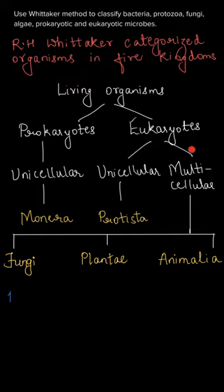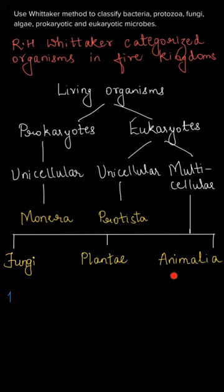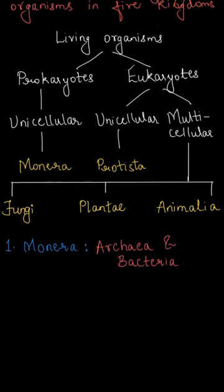Eukaryotes were again divided into two types on the basis of their cellularity: unicellular and multicellular. Unicellular eukaryotes form the second kingdom, Protista. Multicellular eukaryotes were further divided into three kingdoms: Fungi, Plantae, and Animalia. So there are five kingdoms: Monera, Protista, Fungi, Plantae, and Animalia.